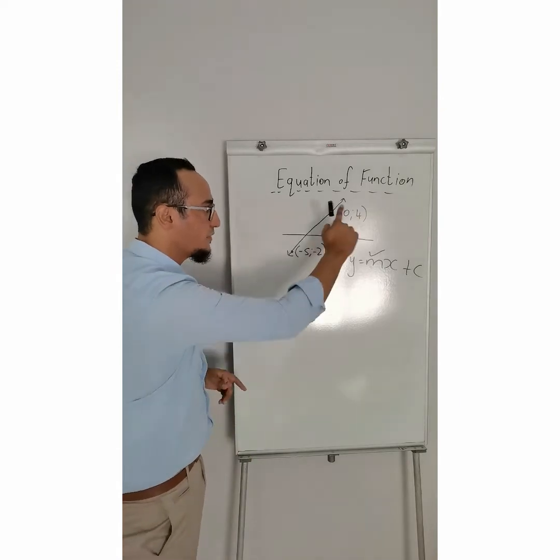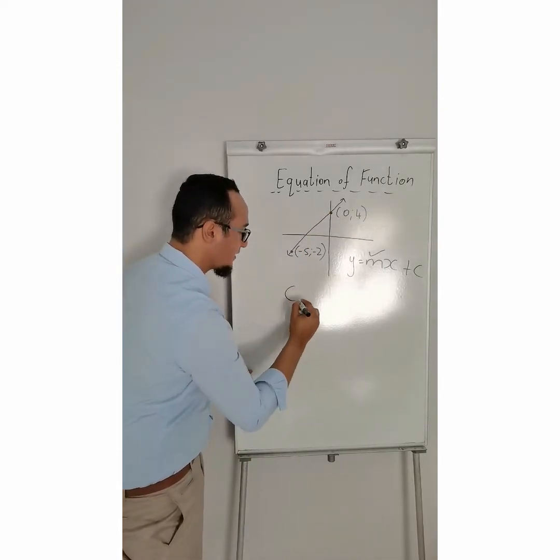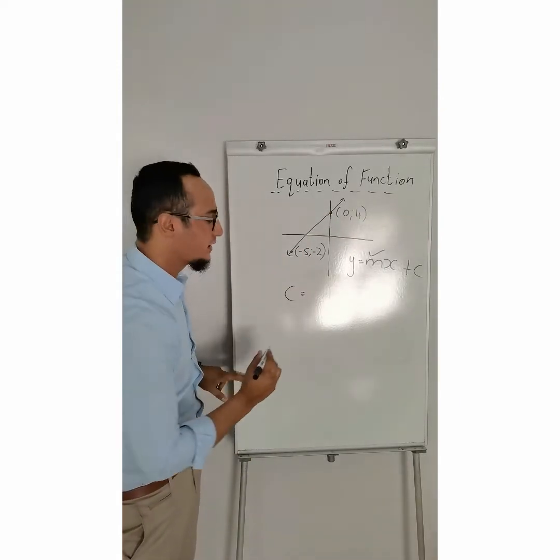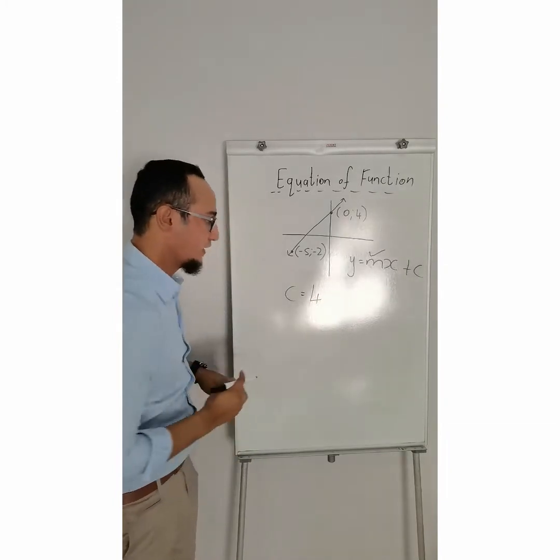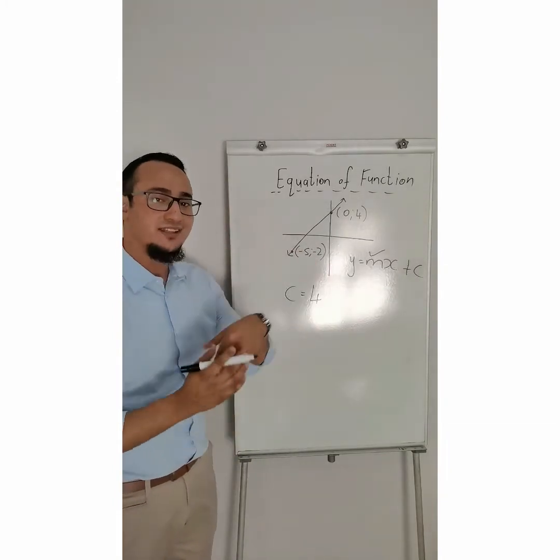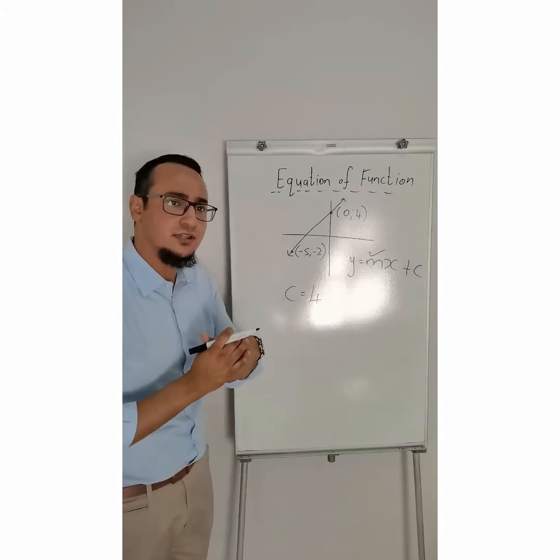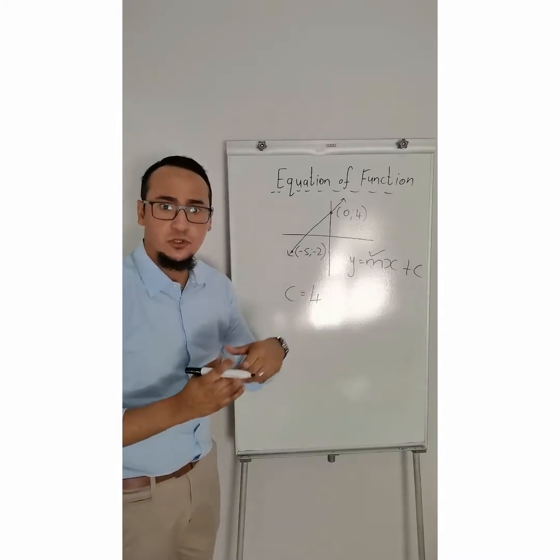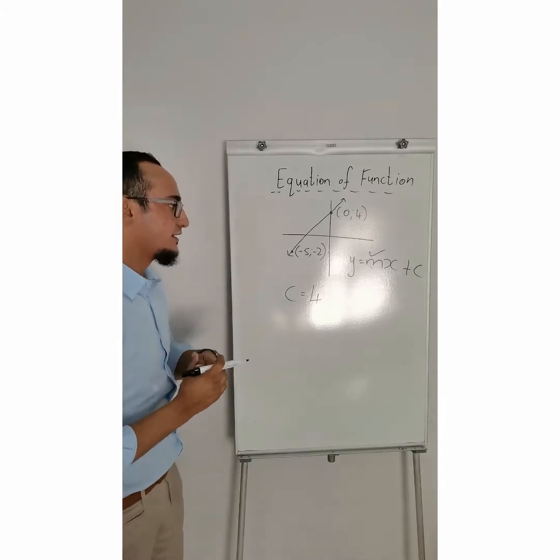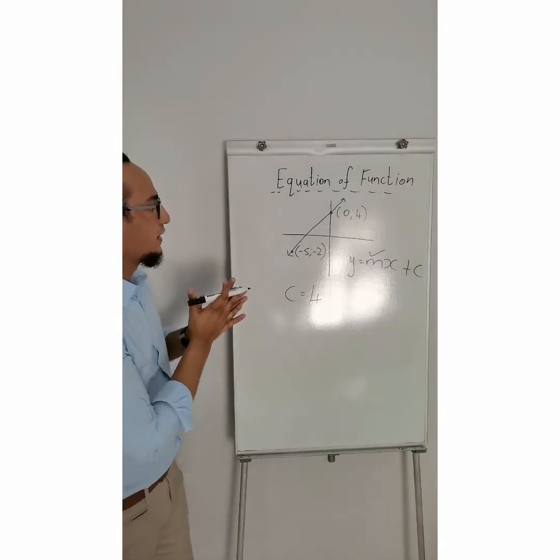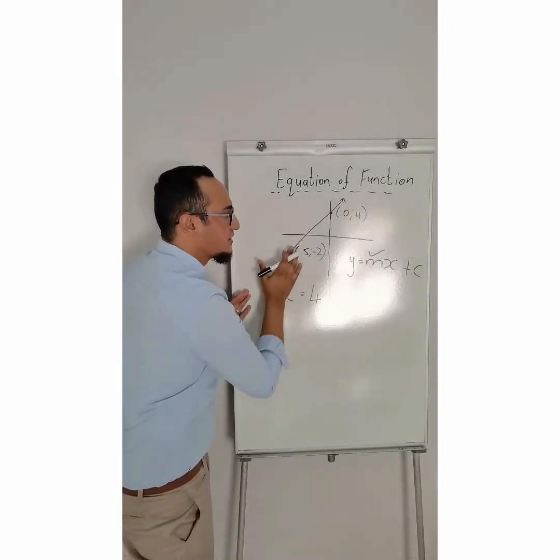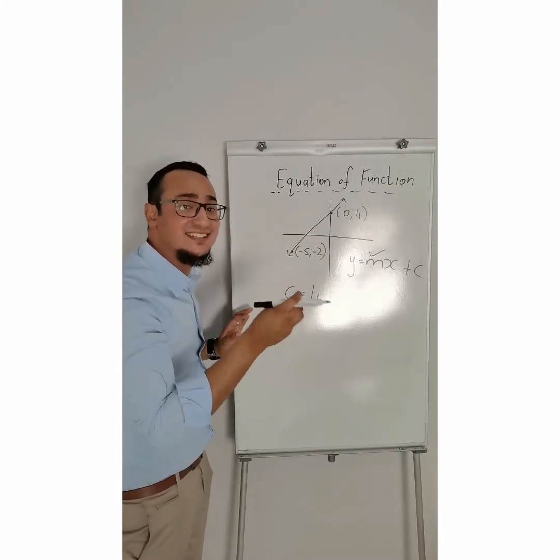So, from the graph earlier, we can see that c is already going to be 4. The next thing is determining the gradient. Now, there's two ways to do it. The substitution method, or actually calculating the gradient. So, I'm going to do the second way. Determine the gradient of this line, and gradient means the steepness.